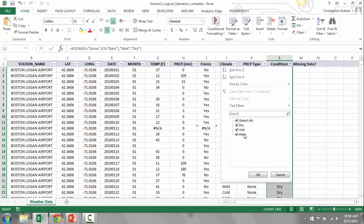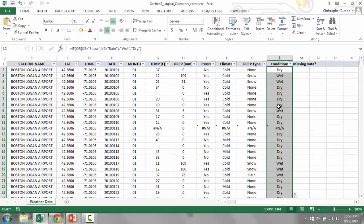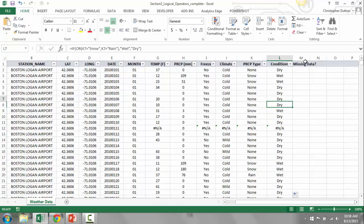And as you can see, I'm getting both dry and wet values. If I just do a quick spot check, any time column K is none, I'm seeing a dry value, and then snow equals wet, rain equals wet, everything looks good. So there you go. That's a quick example of how to use AND and OR statements to develop more complicated and dynamic logical tests.